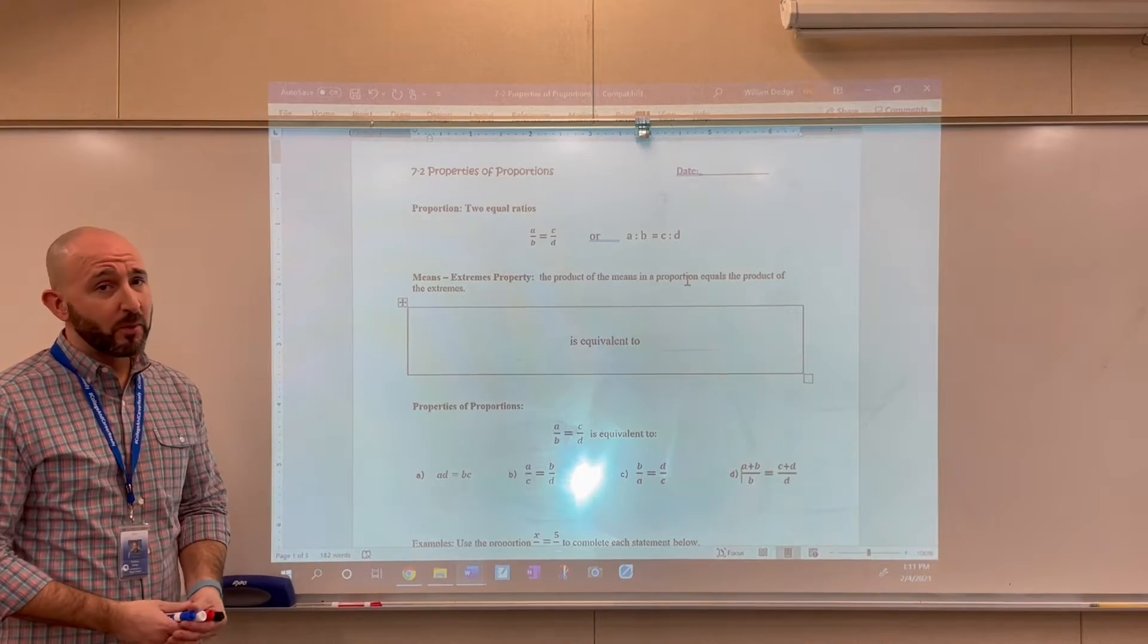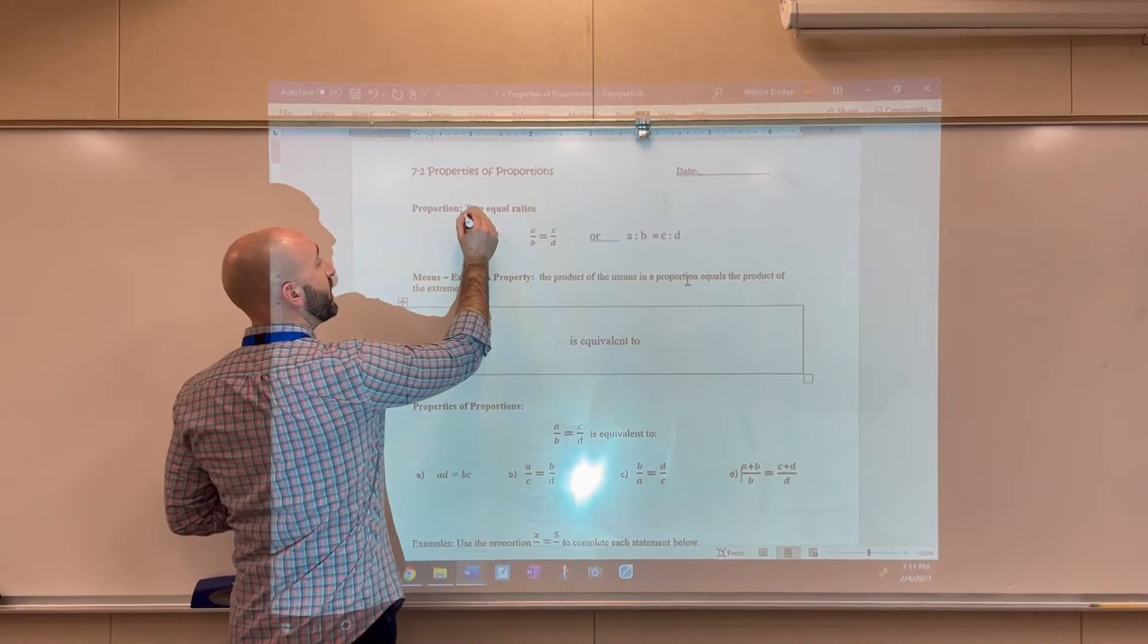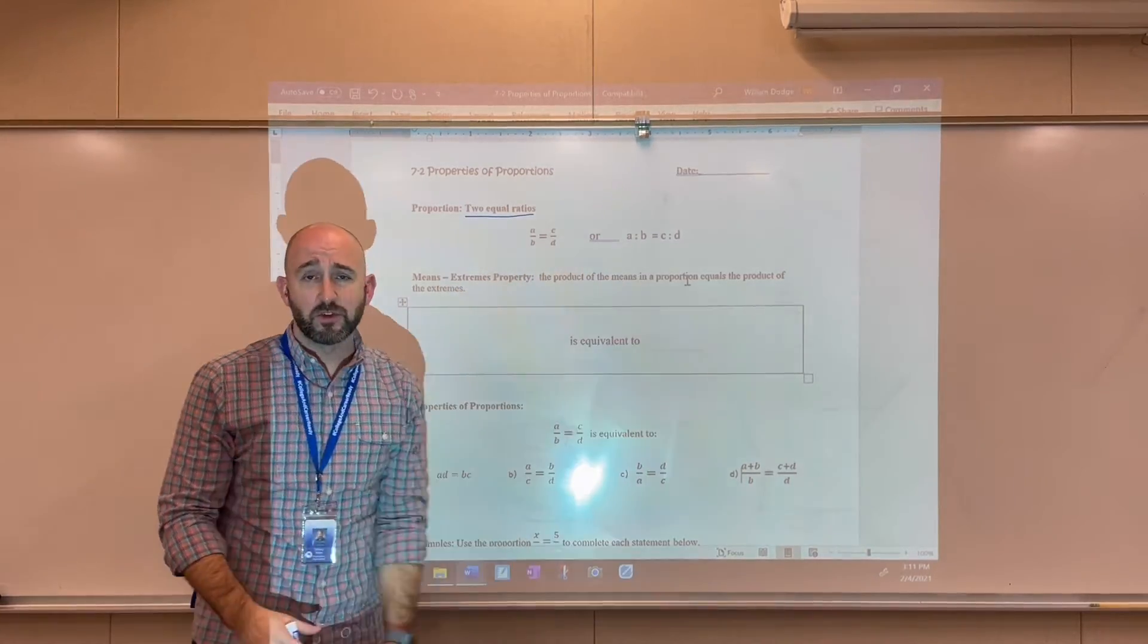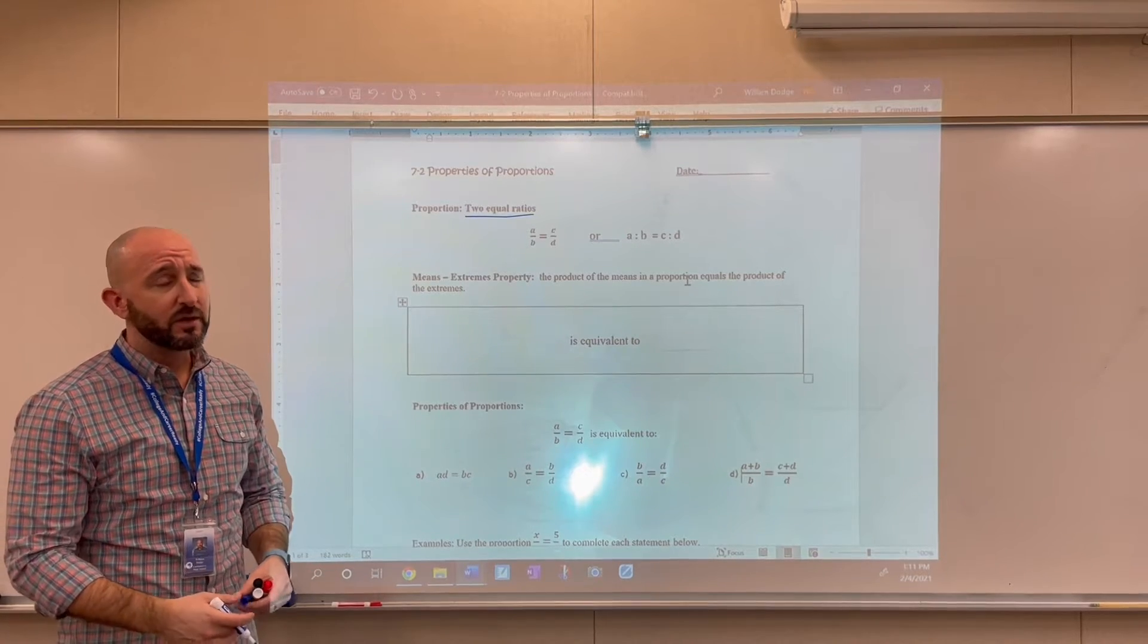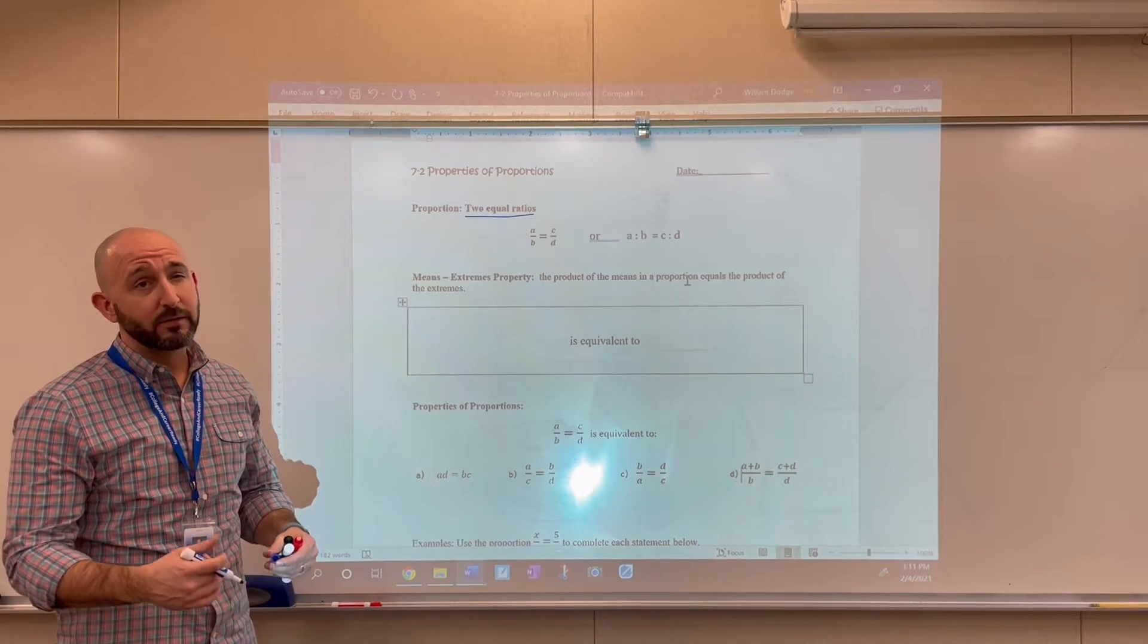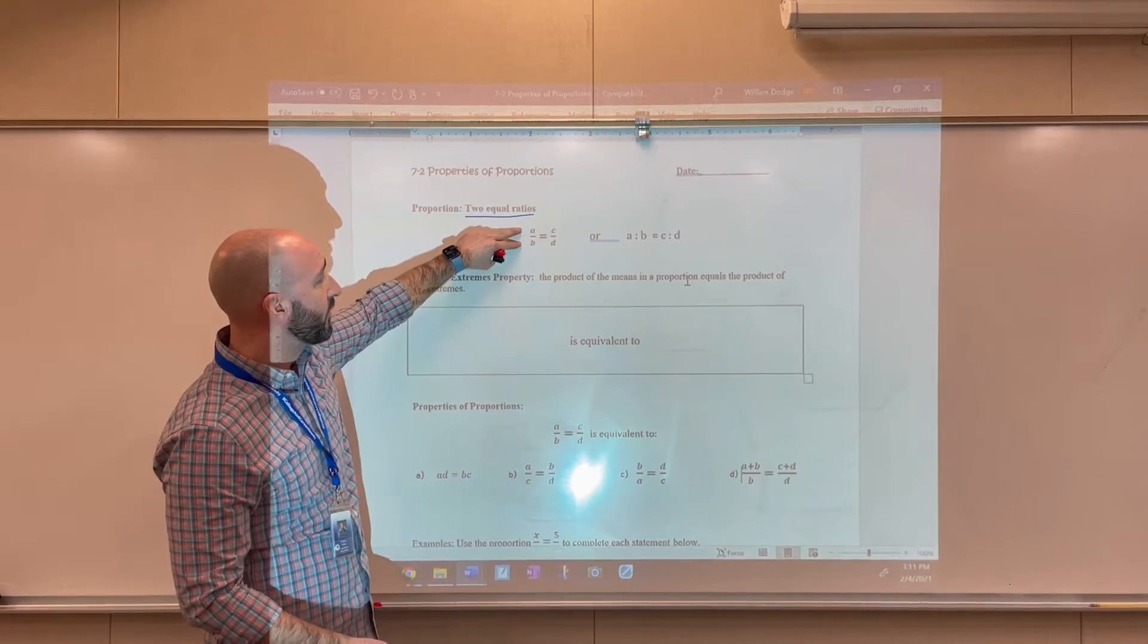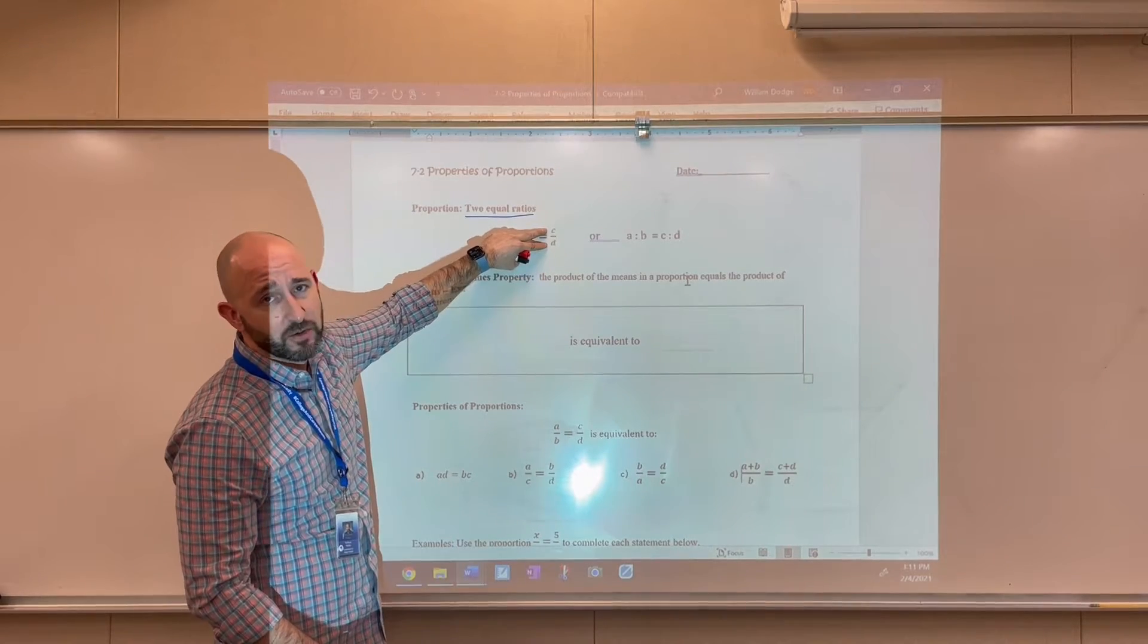So the definition for proportion is really simple, really straightforward. All it is is just two equal ratios. Now what you're seeing here are two different ways in which we can express proportions. These are probably the most commonly used ways of displaying a proportion. And really all it's saying here is that this ratio A to B or A over B is equivalent to the ratio of C to D.